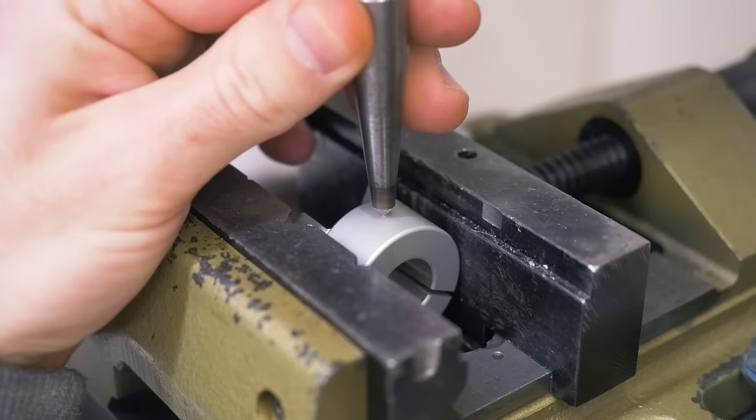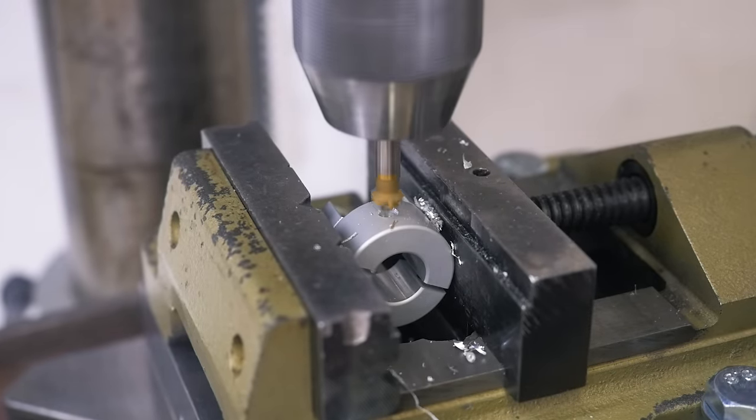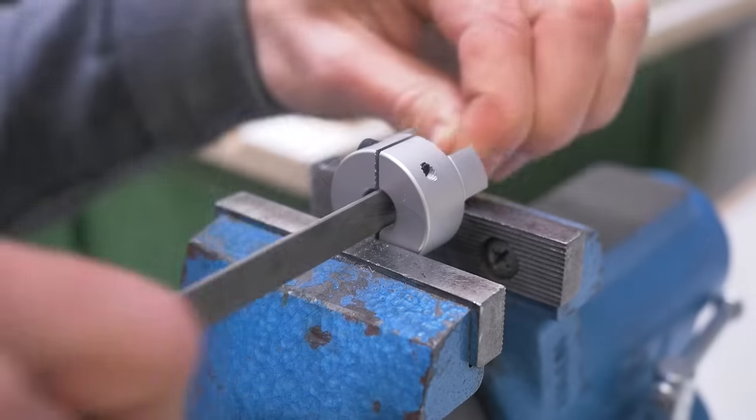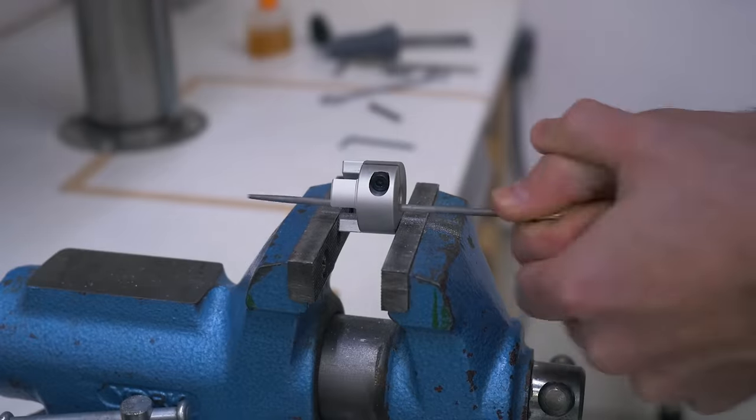Then I needed a threaded hole for a set screw against a flat spot. So hole, chamfer, threads and done. The other coupling part needs a slot for the motor shaft key, which I had to file by hand.